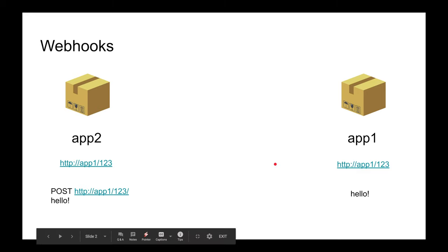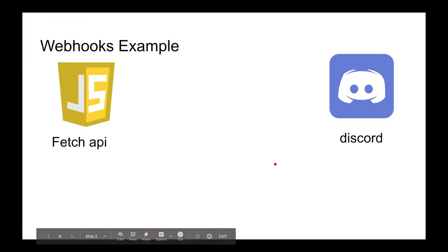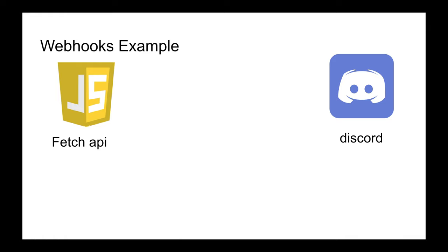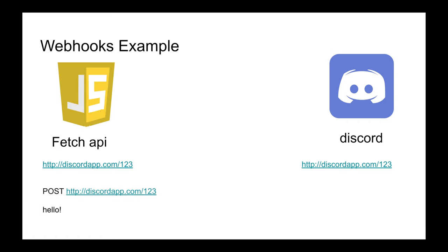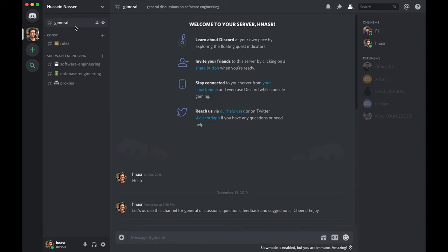Here's the example we're going to do. We have Discord — a community chat application. On the other side, I'm going to use the browser and the fetch API to consume the webhook. In Discord I'll create a new webhook on the general channel, then in JavaScript I'll take that URL and POST a message called 'hello,' which will create a new message in the general channel.